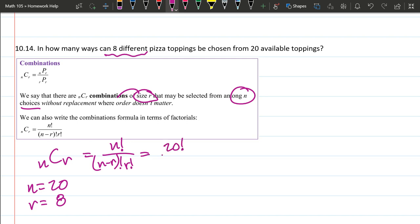20 factorial divided by n minus r—so that's 20 minus 8 factorial—and then we have an r factorial, which is 8 factorial. This is probably too big for your calculator. So what I'm going to do, we'll subtract the 20 minus 8 first.